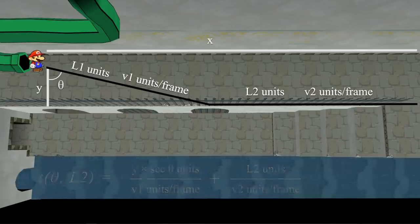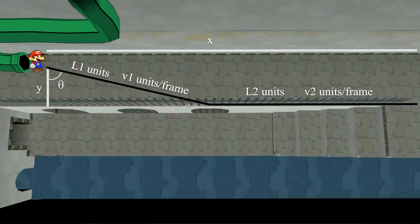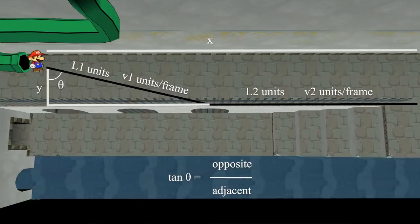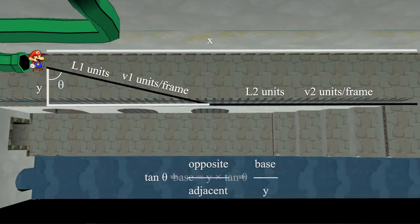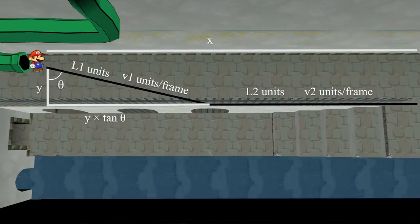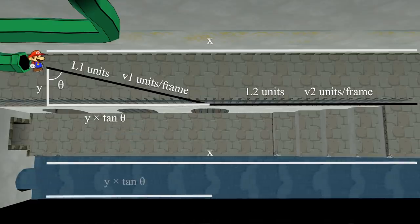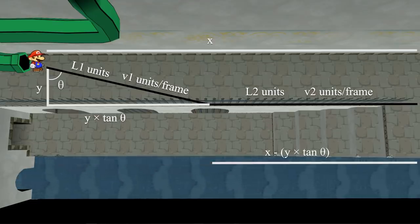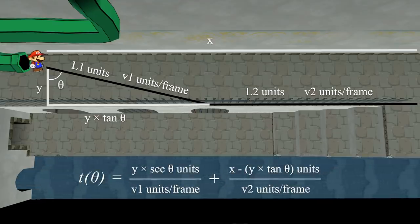Now, finding L2 is going to take an extra step. We first need to find the length of the base of the triangle. First, we know that the tangent of theta is equal to the opposite side, which is the base of the triangle, times the adjacent side, which is y. Thus, we can rearrange this as y times the tangent of theta. To find L2, we then have to take x minus the base of the triangle, so we get x minus y times tangent theta. Thus, we now have an equation for time as a function of the angle theta.